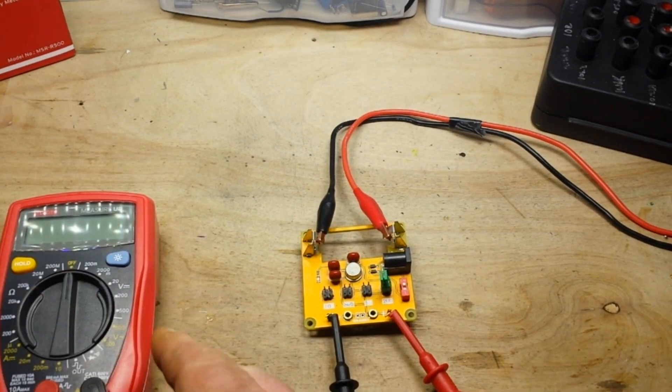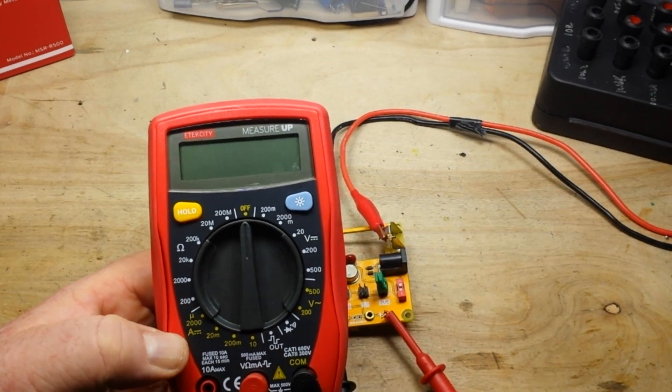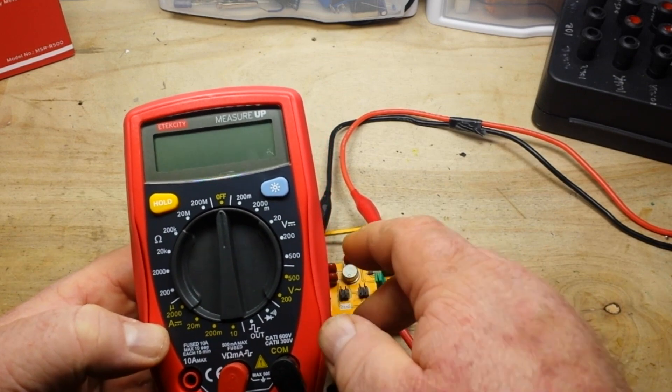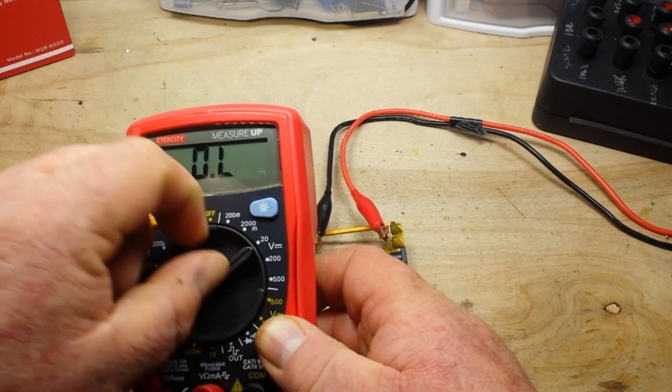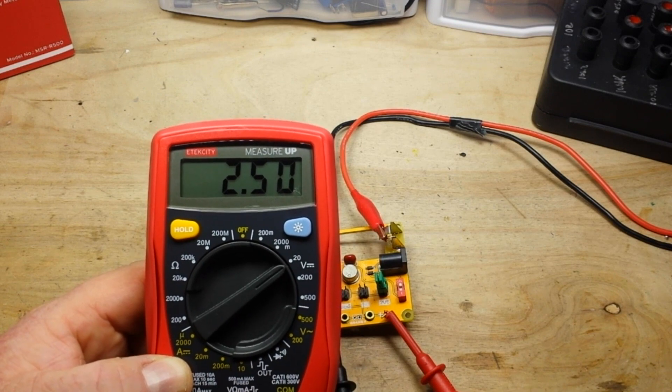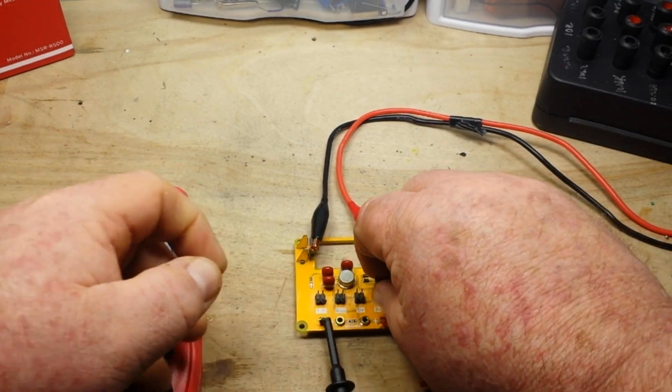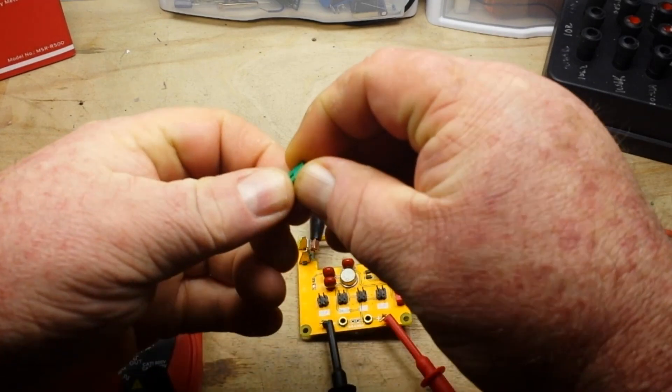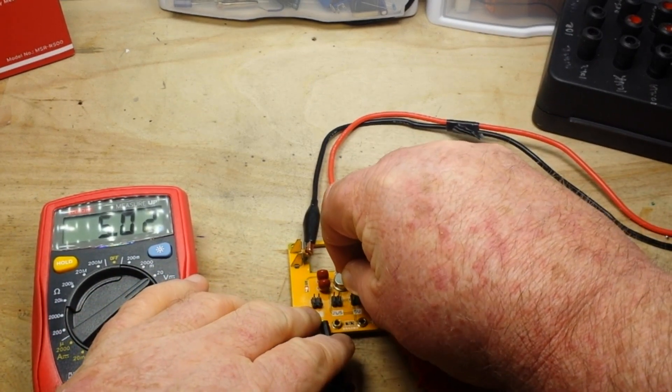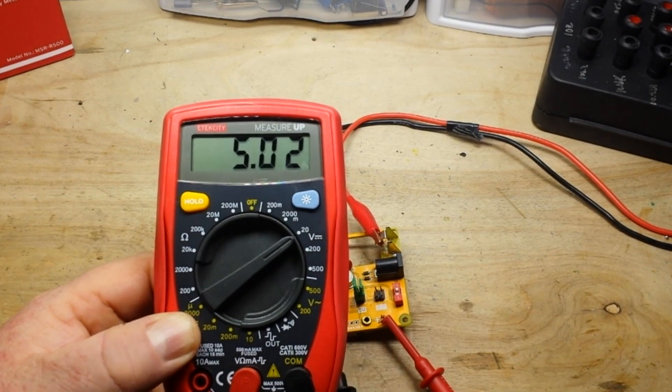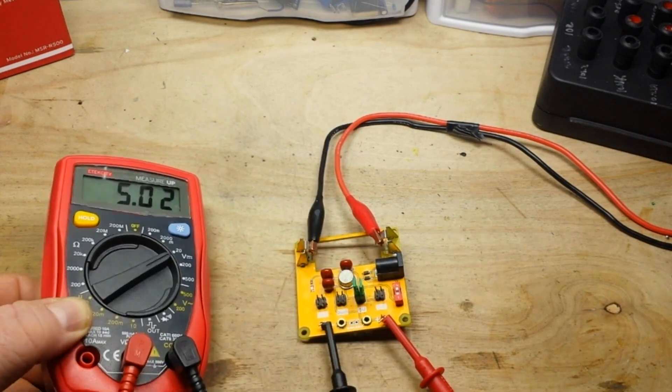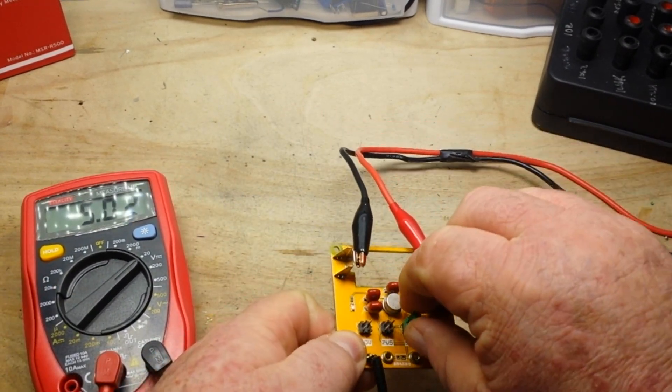We'll start off on the low end at 2.5 volts. There we go, 2.51, 2.5. I like it. Up to 5 volts, 5.02. Give it a second to think about it. Seems pretty convinced it's 5.02. All right.